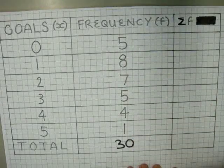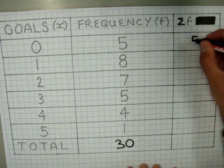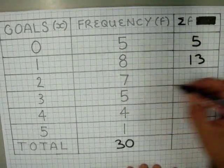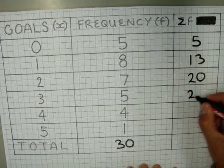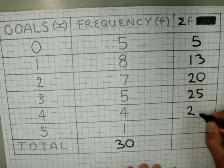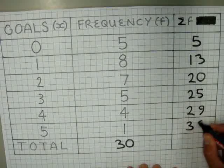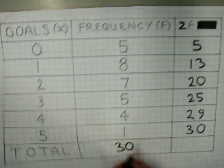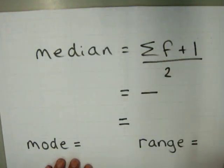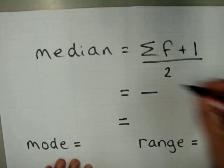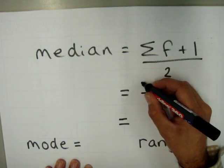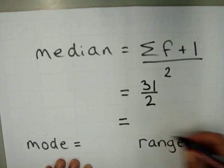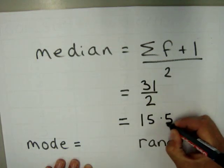So the cumulative frequencies are: 5, plus 8 is 13, plus 7 is 20, 25, 29, and 30. So the median is the sum of our frequencies plus 1 divided by 2. This gives us 30 plus 1 is 31, divided by 2 is 15.5.